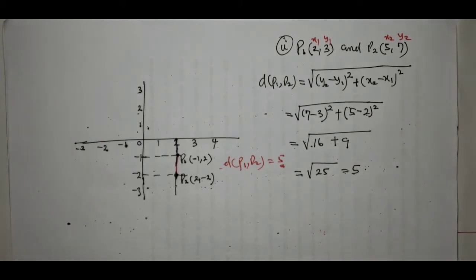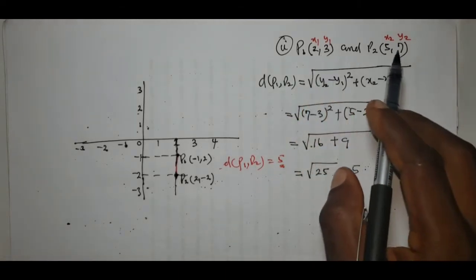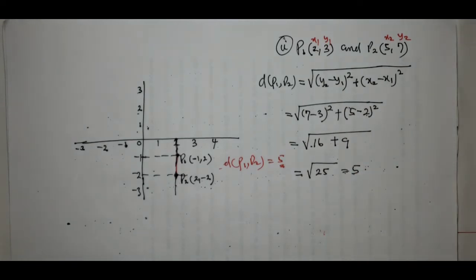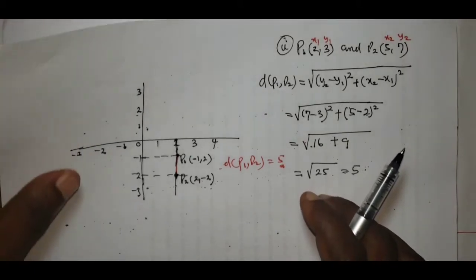So the square root of 16 plus 9 is the square root of 25, which is 5. We observe that the distance between the points P1(2, 3) and P2(5, 7) is once again 5. Of course, the distance is not always 5, so we shall take another example.